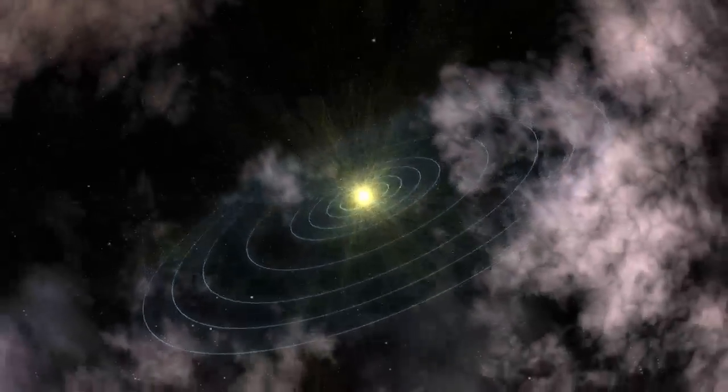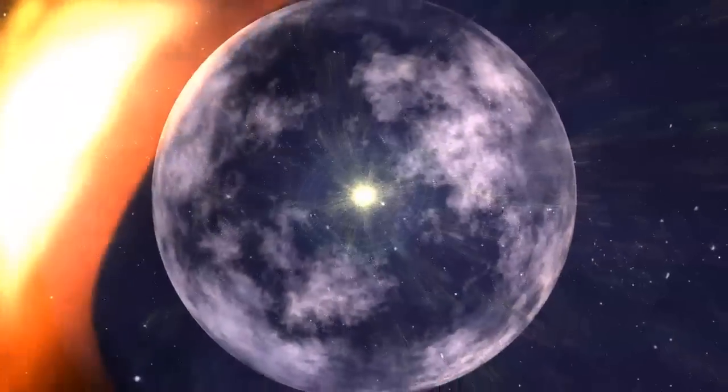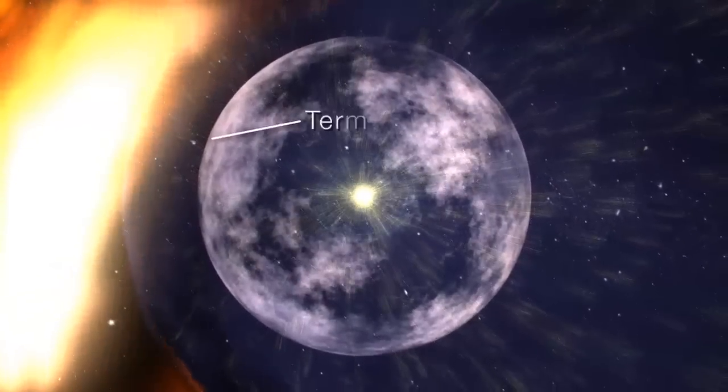As the solar wind travels out from the Sun, it pushes against the galactic medium and abruptly slows down. This is called the termination shock.